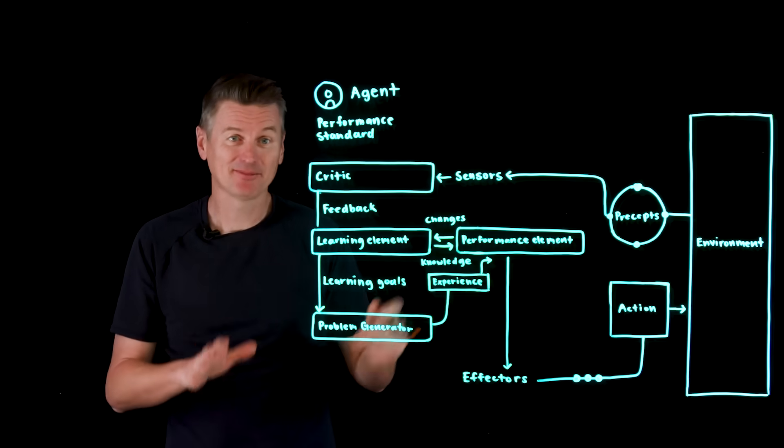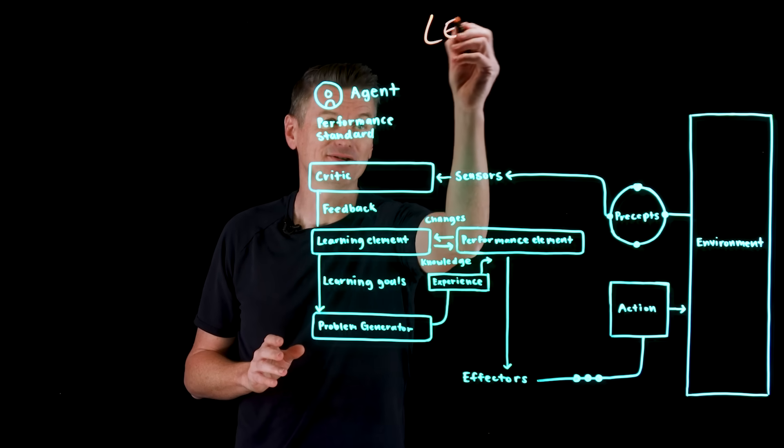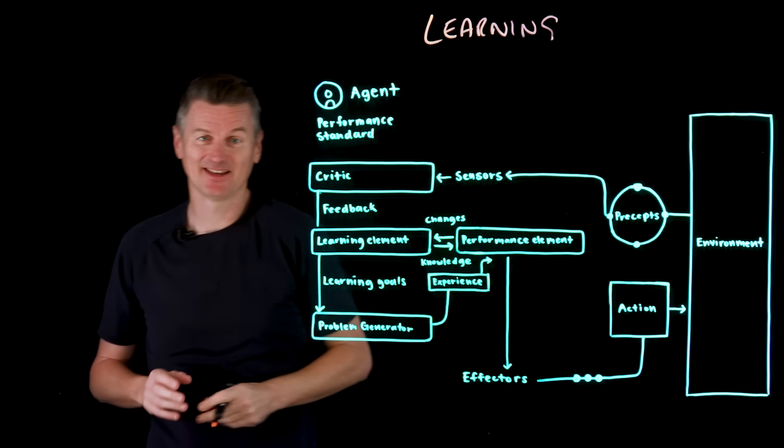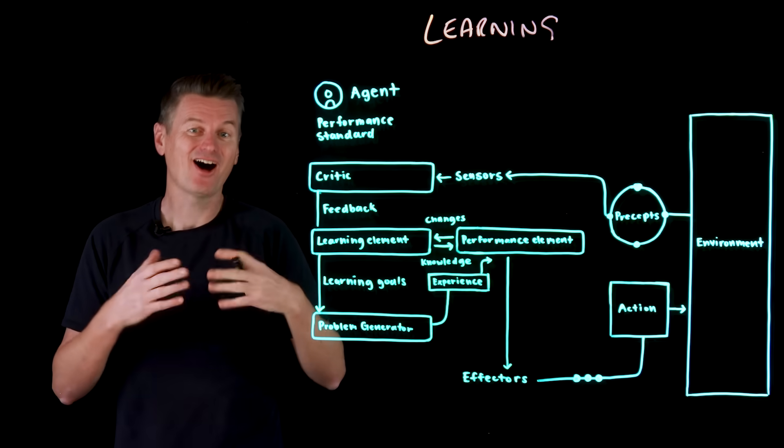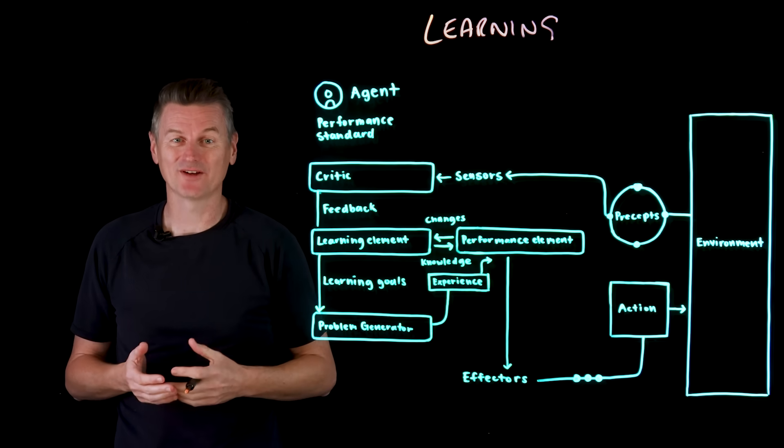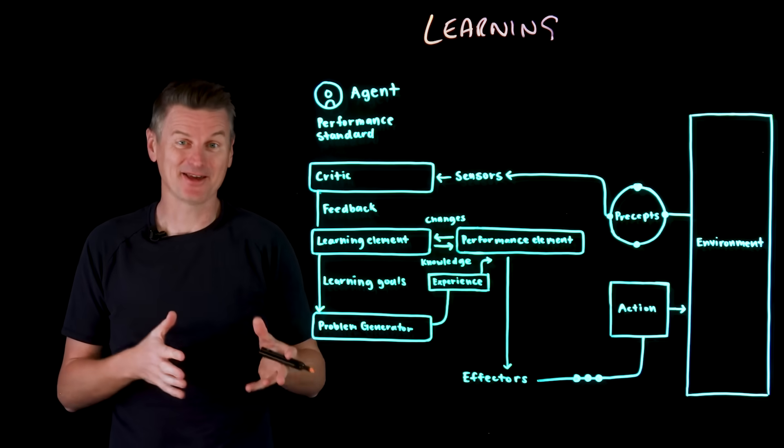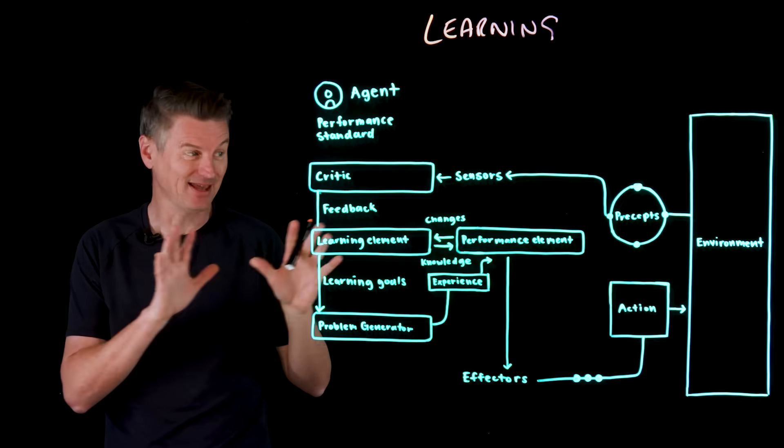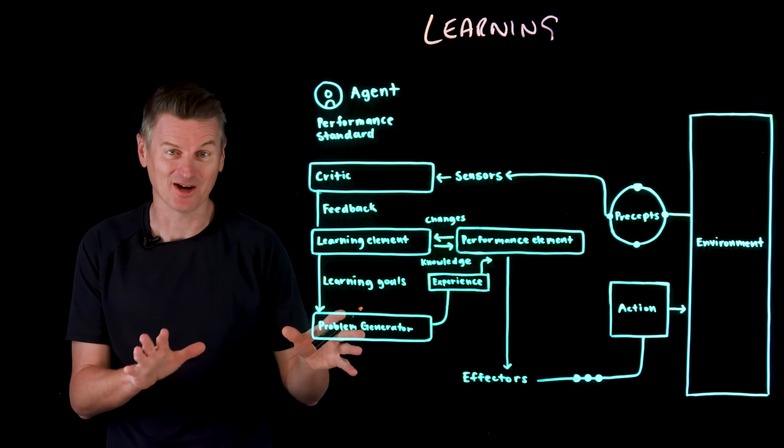The fifth agent is the most adaptable and also the most powerful, and it is the learning agent. So rather than being hard-coded or being goal-driven, it learns from experience. It improves its performance over time by updating its behavior based on feedback from the environment. So how does it work?